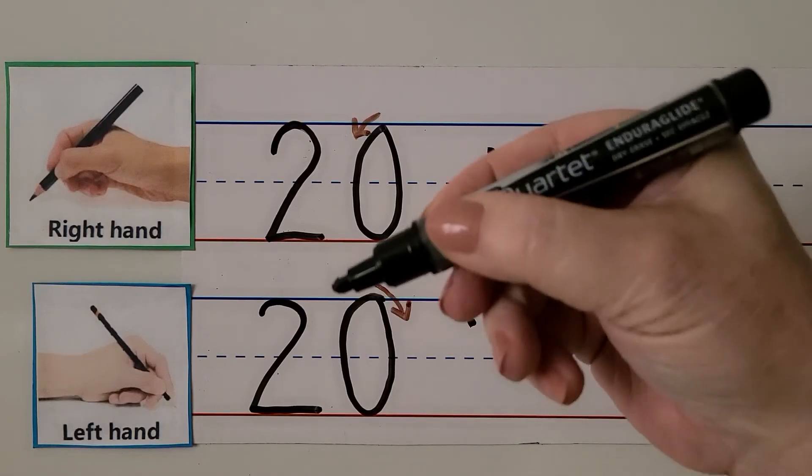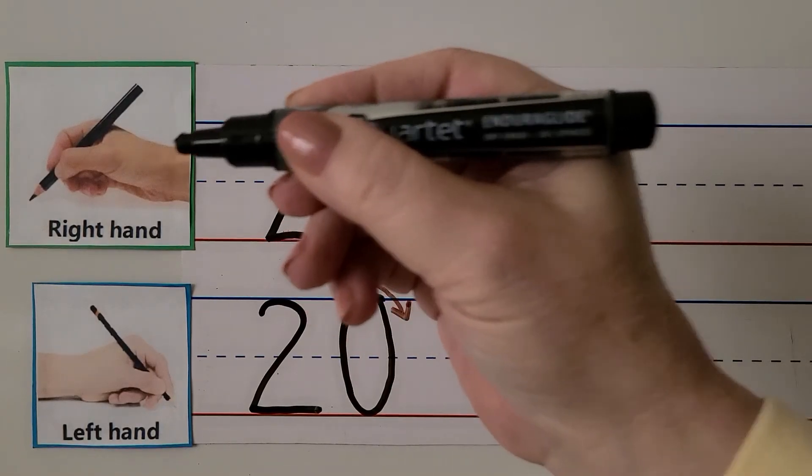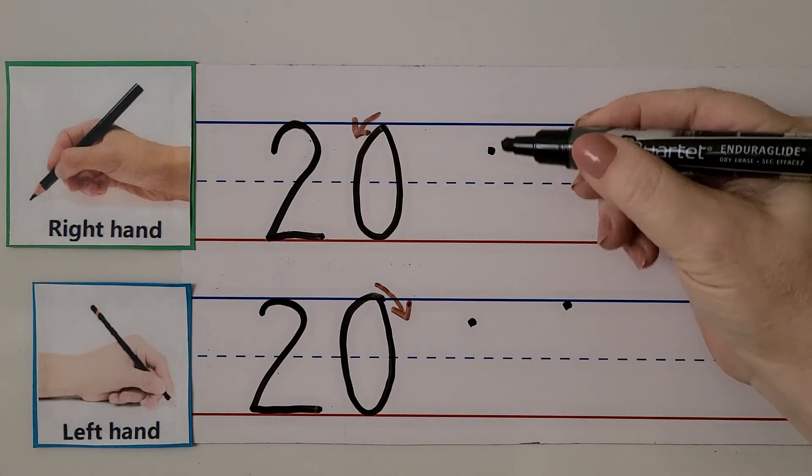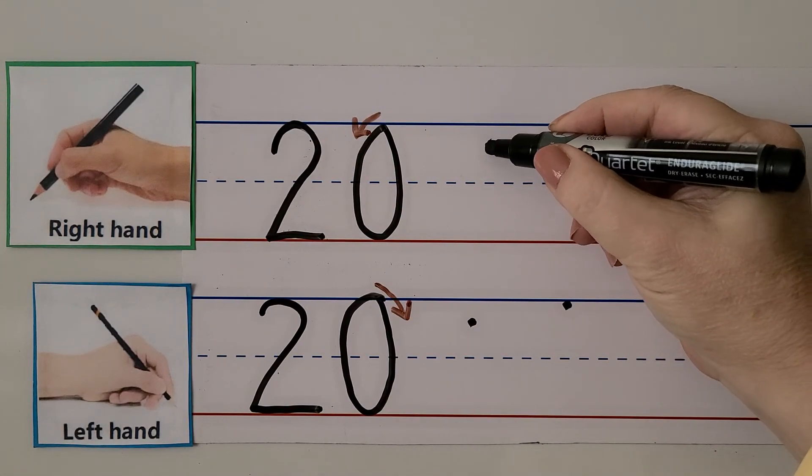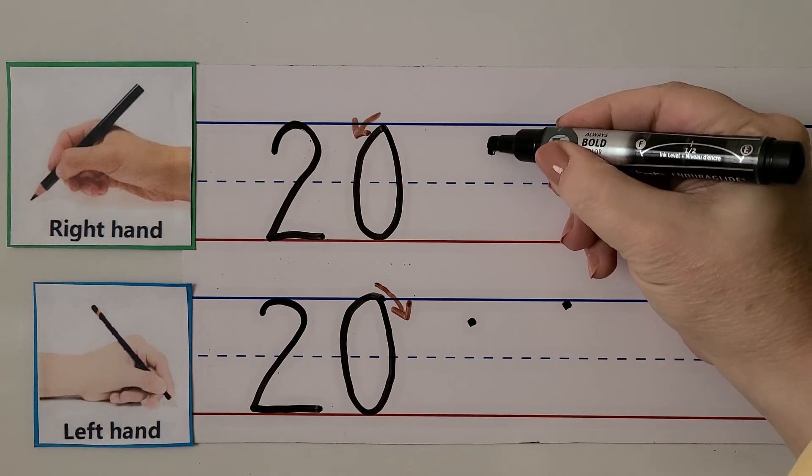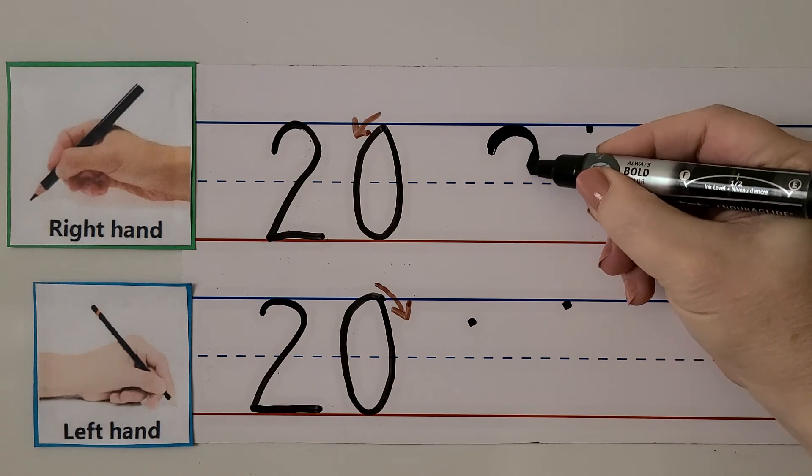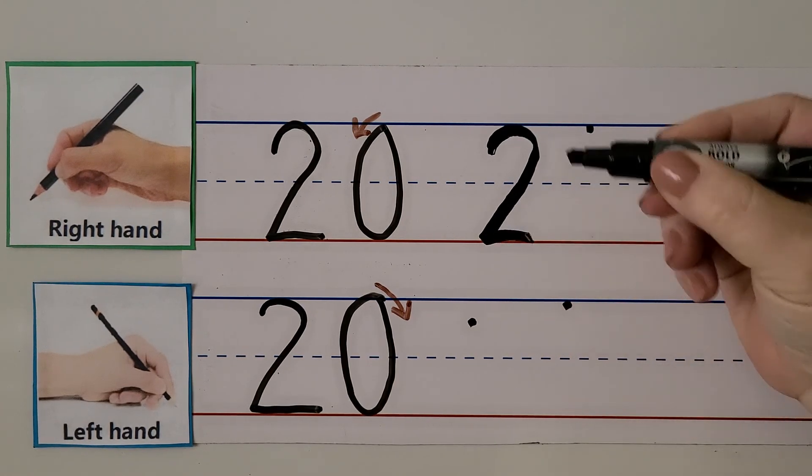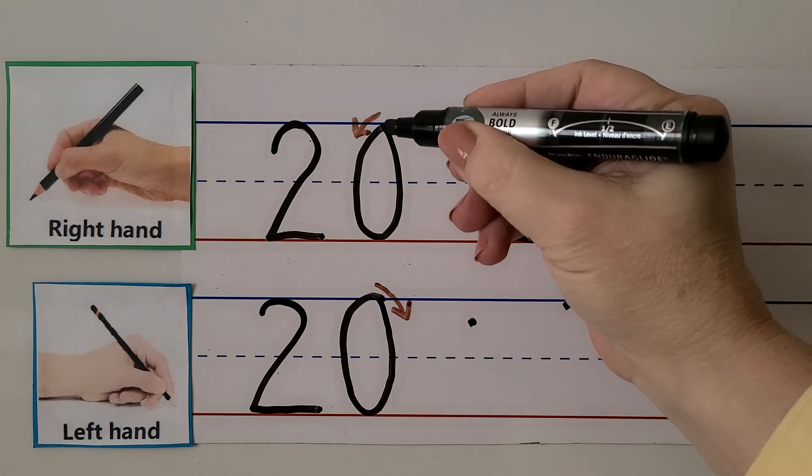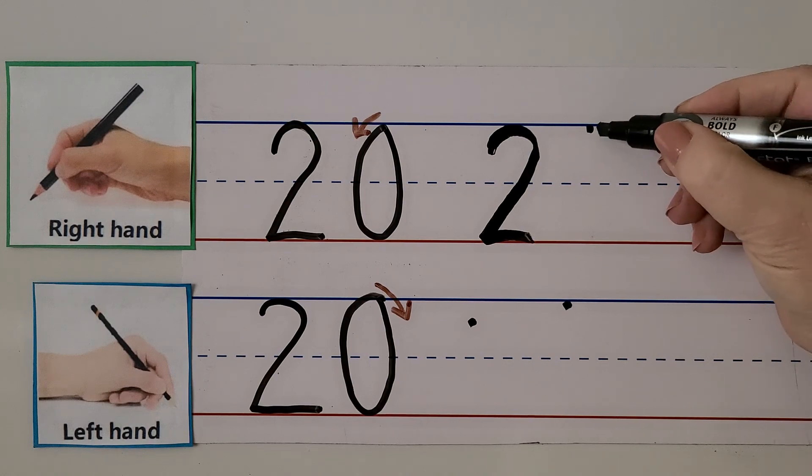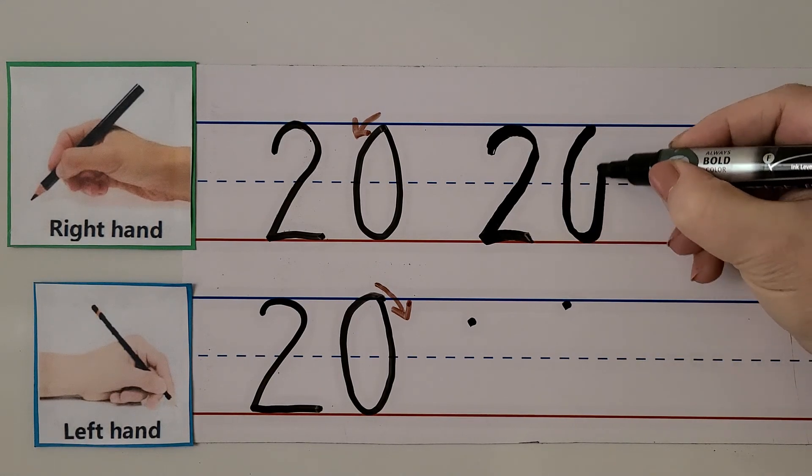We can write the number 20 with our right hand. We make a 2 with a zero next to it. We start here to make the 2 and come up, slant down to the bottom line and pull towards our hand. For the zero, we start at the top, go around this way and come back up. 20.